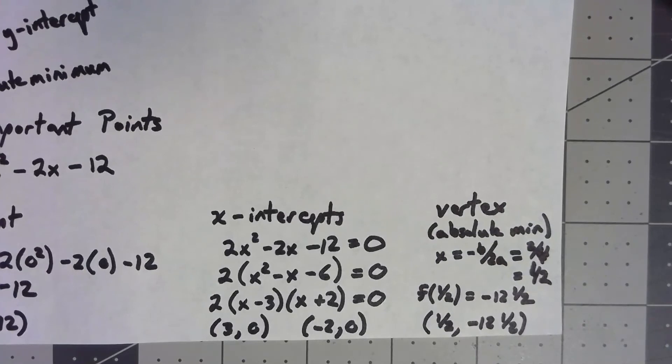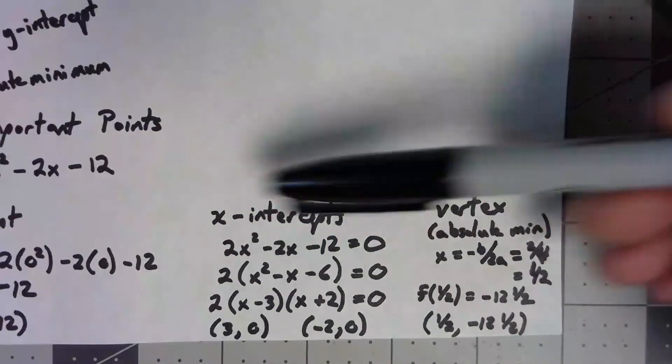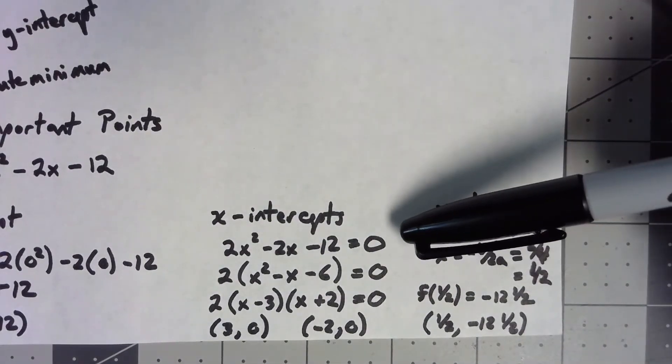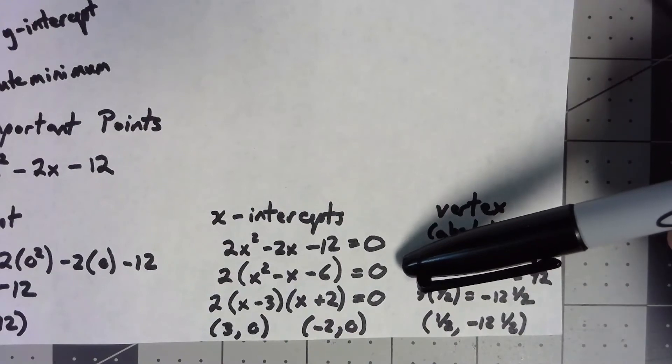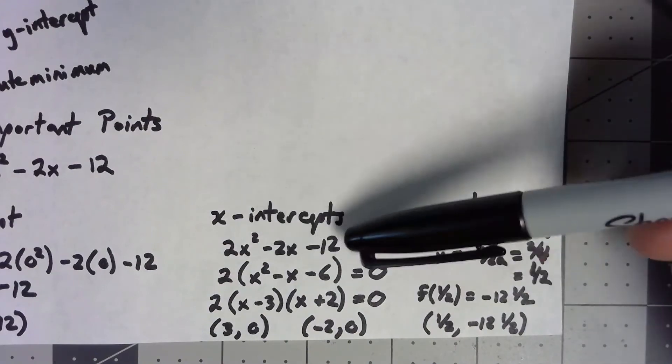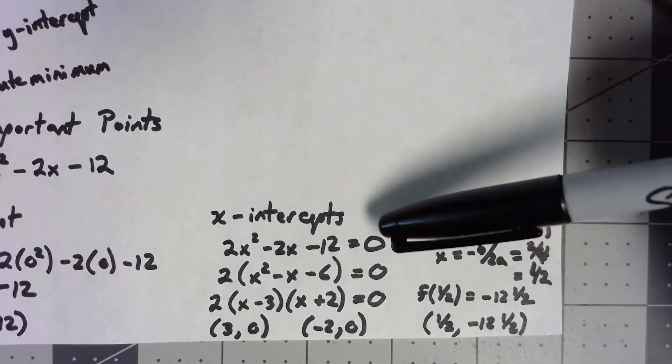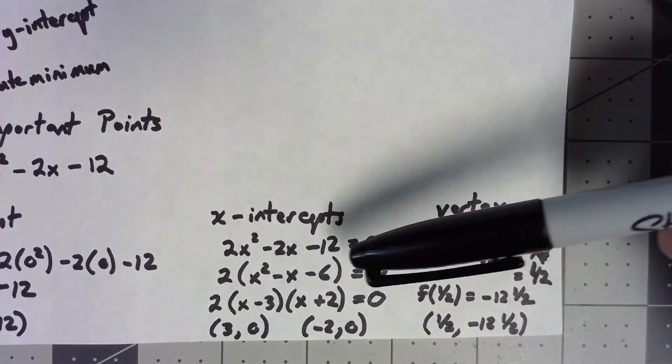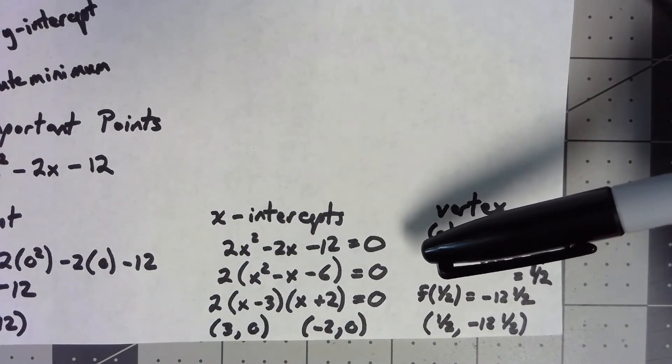For the x-intercepts, we want the output, we want the y, to be zero. So, we set the equation equal to zero and we solve. And this one I set up so that it factors nicely. We can go ahead and factor out a two. And once I've factored out a two, I can see that what remains, the x squared minus x minus six, that factors as x minus three times x plus two.